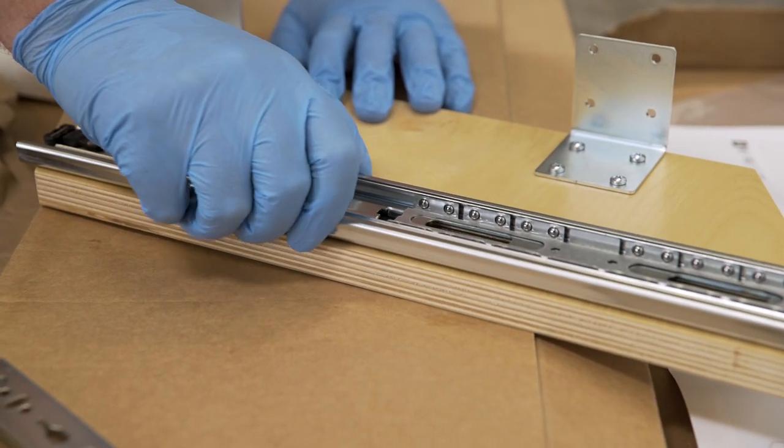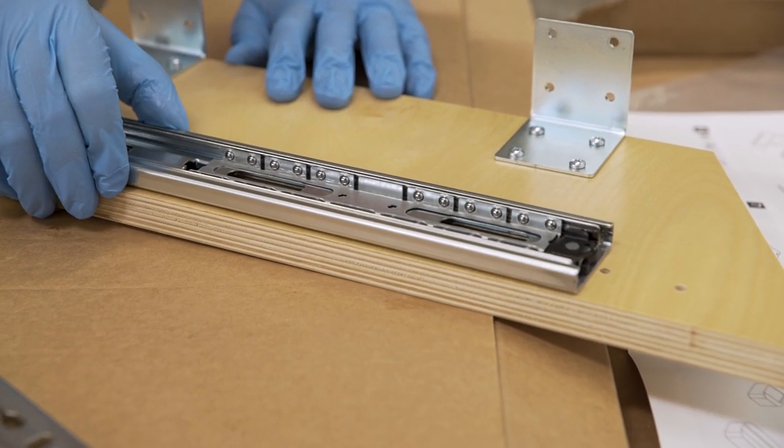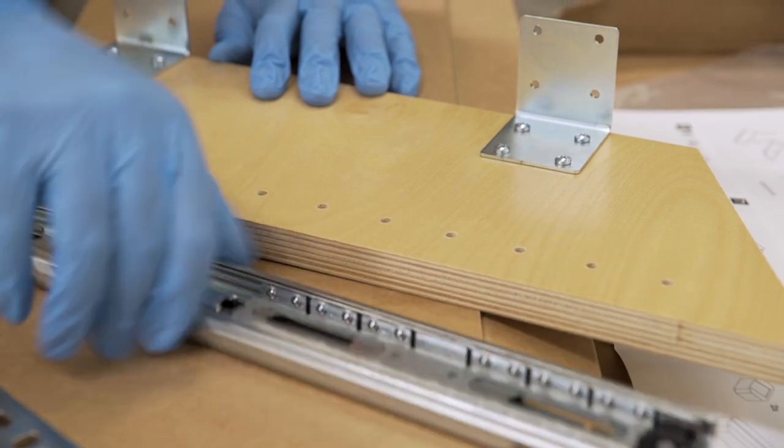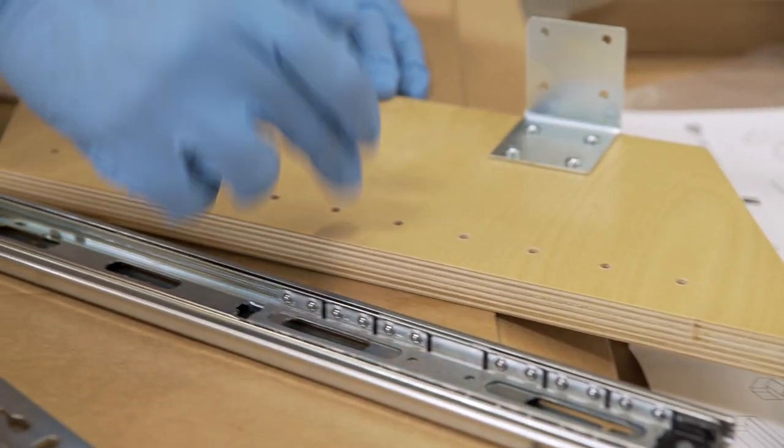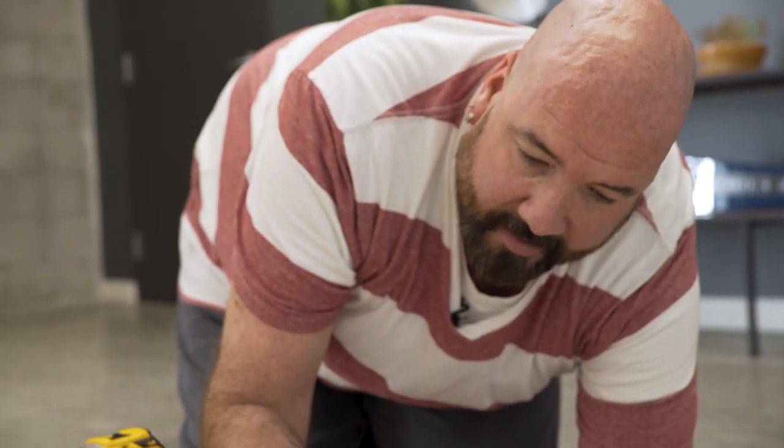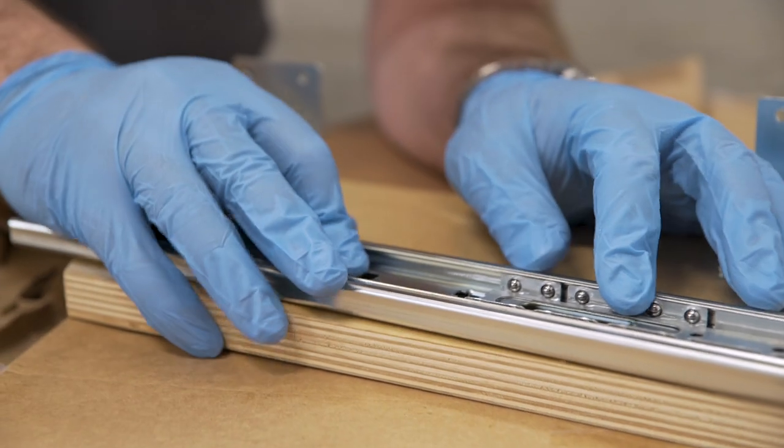So we're going to take the slide and we're going to put it on the hanger. And a lot of people have wondered why we have all these holes instead of just three. It allows you to basically adjust how far you want it to go out.